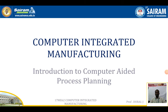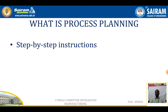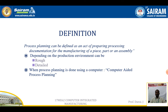Good evening all. Today we are going to discuss about computer-aided process planning. First we discuss about what is process planning. It is a step-by-step instruction and is defined as determining the sequence of operations. Process planning can be defined as an act of preparing processing documentation for the manufacturing of a piece, part, or an assembly. It is used to make the component economically and competitively.